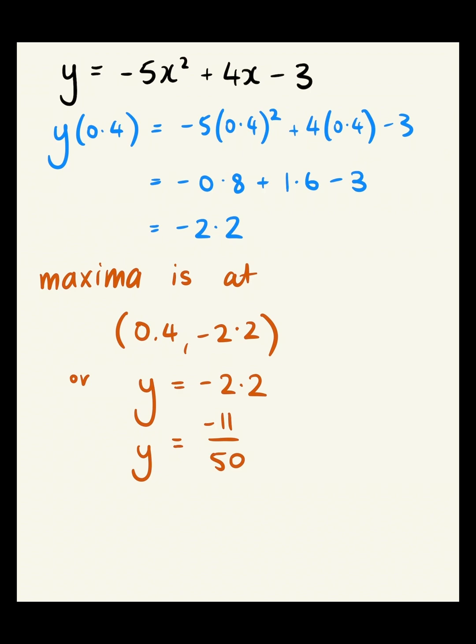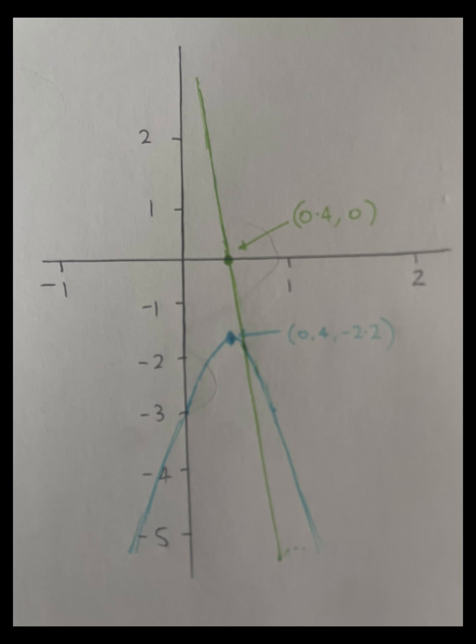And if we have a look at this graph, we can visually see what's going on here. We can see that I've got here our derivative which was negative 10x plus 4 and our value of negative 5x squared plus 4x minus 3. As you can see, the maxima, so the highest point on this curve, is in the exact same spot as when our derivative is set to 0.